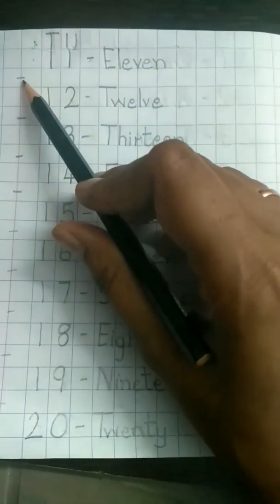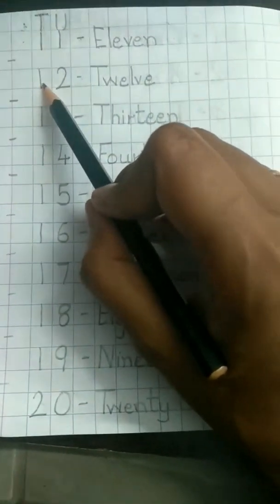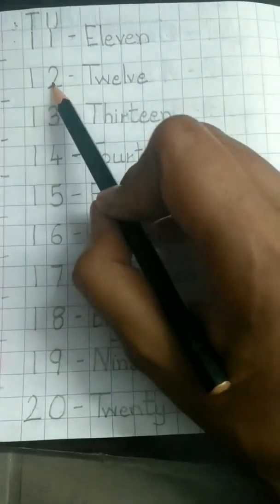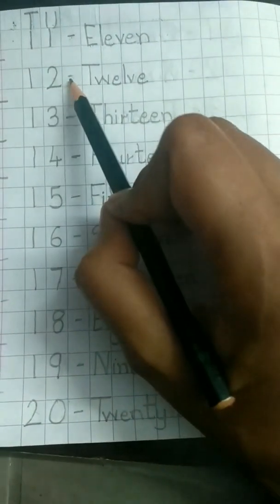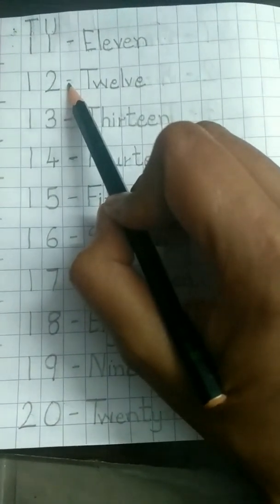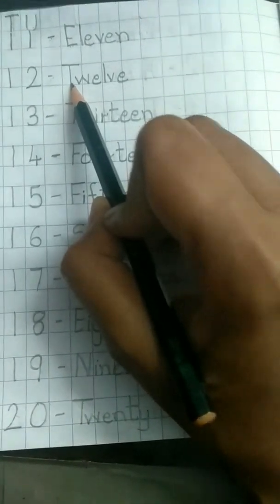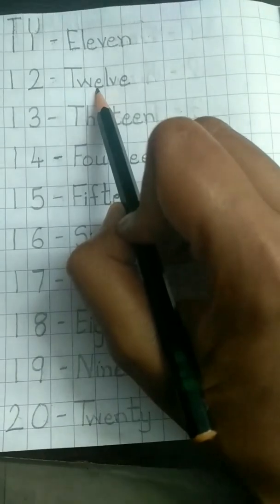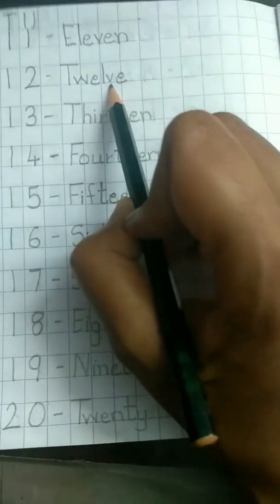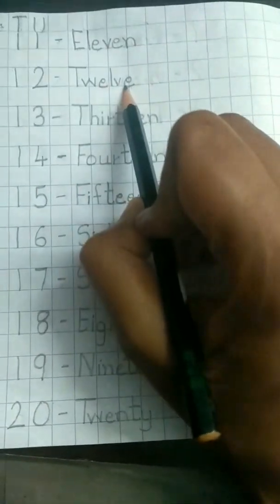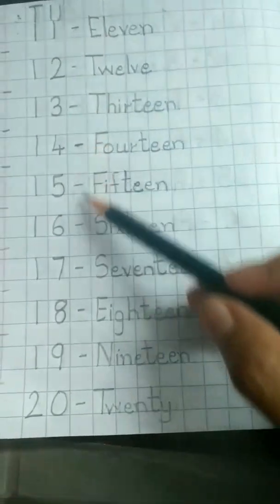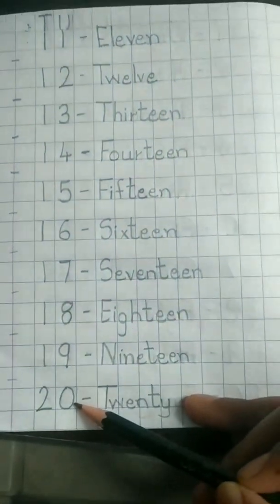Then after leaving a line, we will write number 12. That is 1, 10 and 2 units. Then we put a dash and write 12. Capital T, W, E, L, V, E. 12. Similarly, we will complete till number 20.